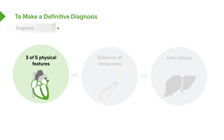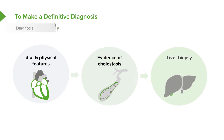Let's look at how we would make a definitive diagnosis. Typically in these children, we need to see three of five physical features, we need to see evidence of cholestasis, and then we'll usually end up doing a liver biopsy.